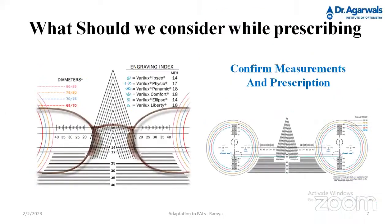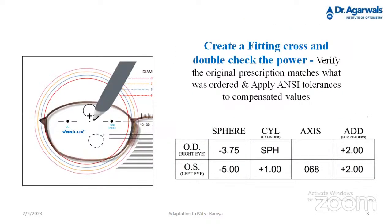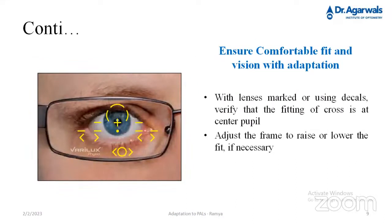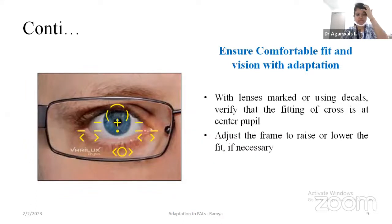When prescribing, confirm measurements and prescription using a centration chart. The center of the frame should align correctly; confirm monocular PD and fitting height, verify distance correction using a lensometer, and confirm prism using the prism reference point. Create a fitting cross and double-check the power, verifying the original prescription matches what was ordered and applying appropriate tolerances. Ensure comfortable fit and vision during adaptation using decals, verifying that the fitting cross is at the center of the pupil, and adjusting the frame to raise or lower the fit if necessary.